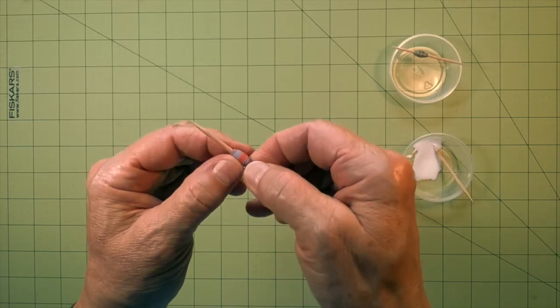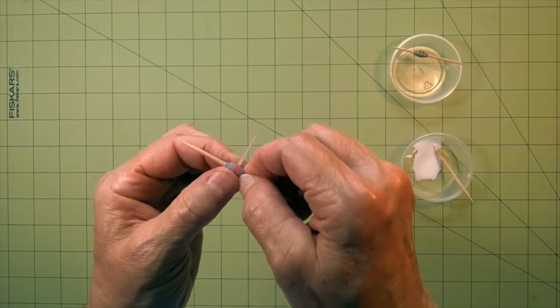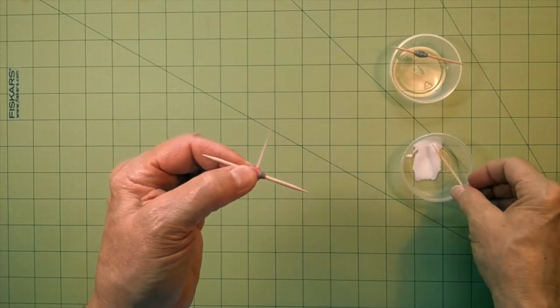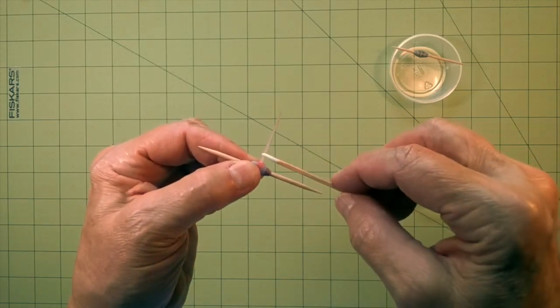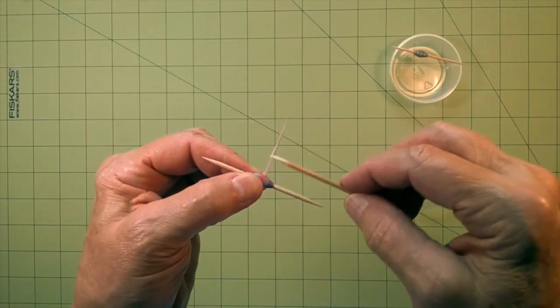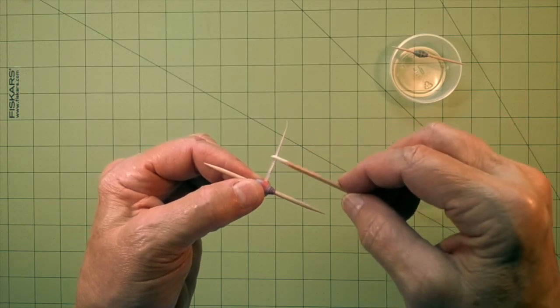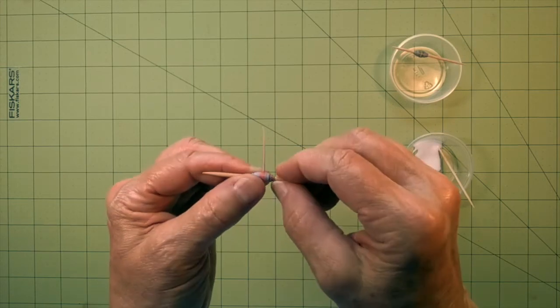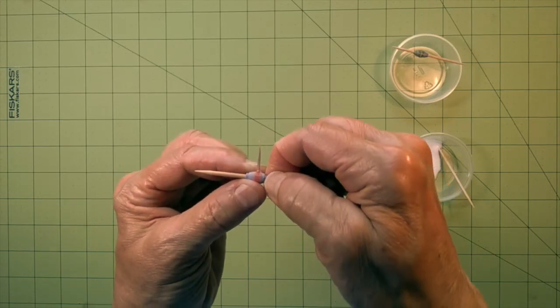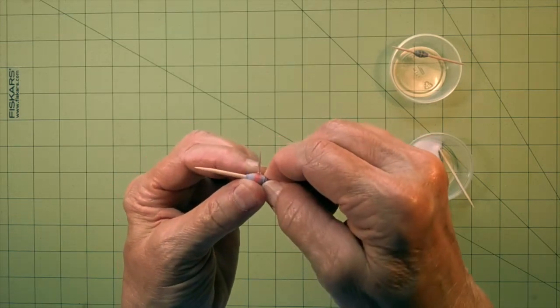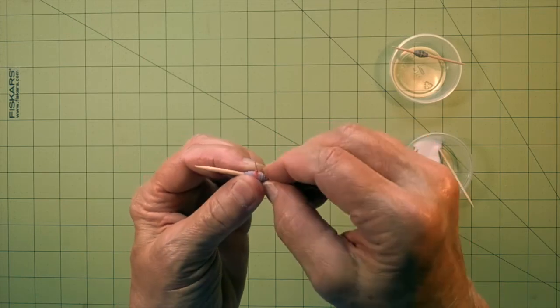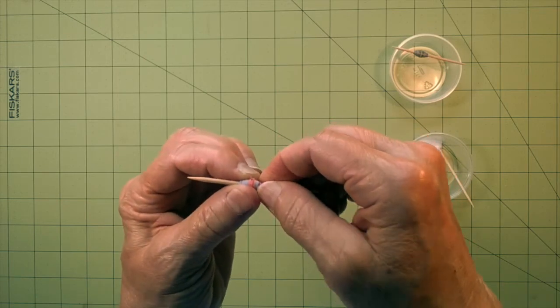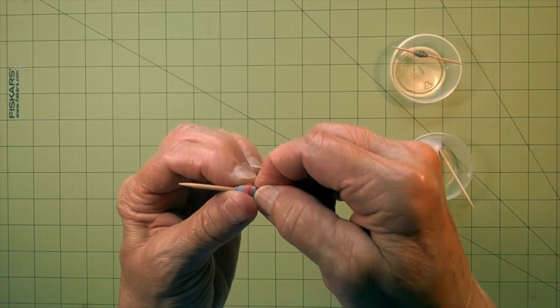And when you get near the end, when you have about an inch or so left, you want to coat the whole end with glue. Very lightly. And then just keep rolling. Pressing tightly. All the way to the end.